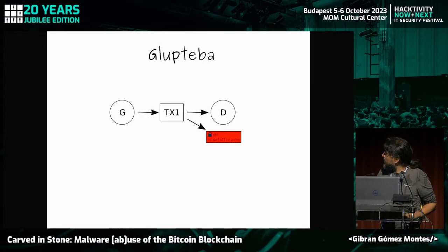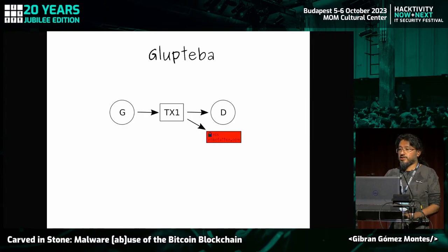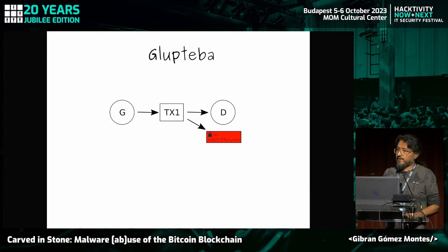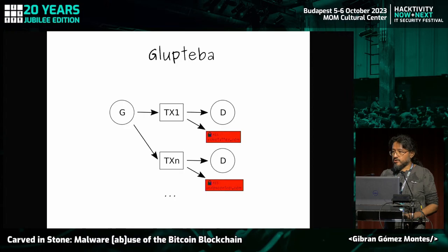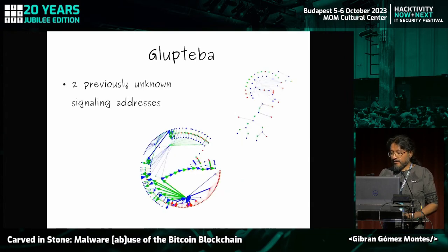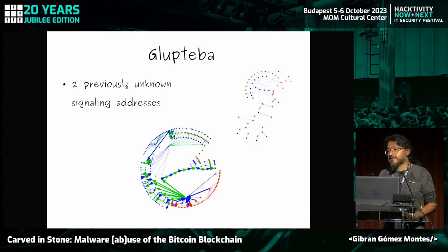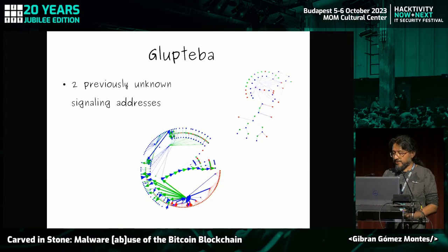For Skidmap, we found one connection with another malware in the graph that we think is a previous version of Skidmap, plus three attribution points — going backwards we found the malware, then going forwards we found the attribution points, allowing us to attribute this operation to three different exchanges. For Glupteba, address G produces transactions with a special OP_RETURN field containing an encrypted string with the domain name, repeating to produce new domain names. We found two separate graph components, indicating two addresses used simultaneously, plus additional previously unknown signaling addresses.